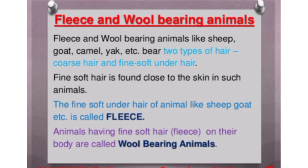Now the next topic is fleece and wool-bearing animals. There are two types of hair in wool-bearing animals. The first one is coarse hair and the second one is fine soft under-hair. Fine soft hair is found close to the skin in such animals. The fine soft under-hair of animals like sheep and goat is called fleece. The animals having fine soft hair - that is fleece - on their body are called wool-bearing animals.